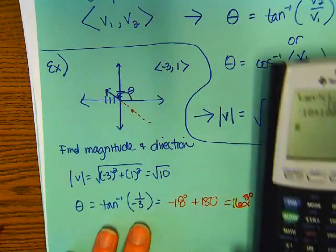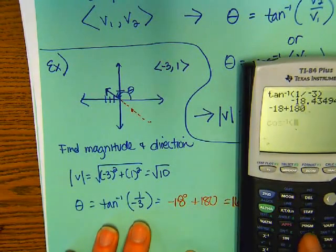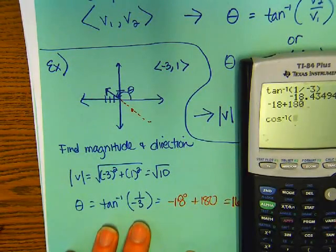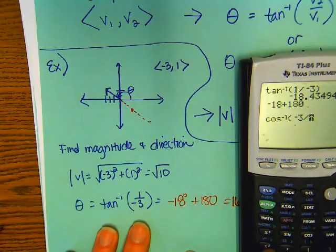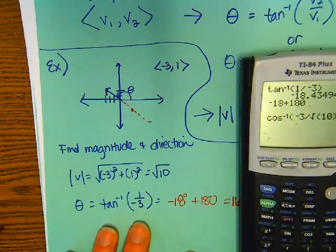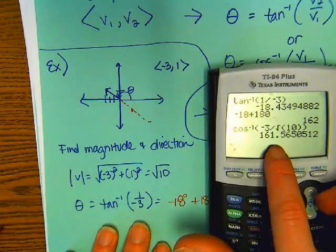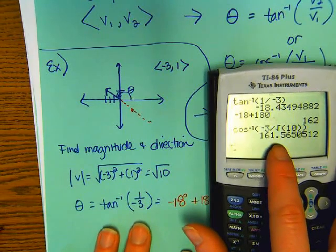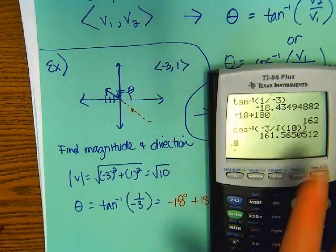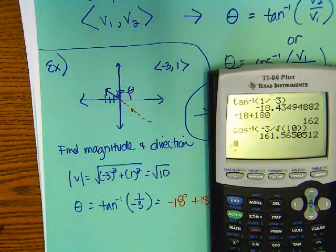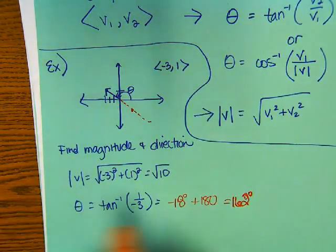Okay. So, it's 162 degrees. 162 degrees. All right. Hey, just to show you, if I did the cosine inverse one, cosine inverse of negative 3 over root 10, that would be... Do you see how it gives you 162 degrees? Okay.